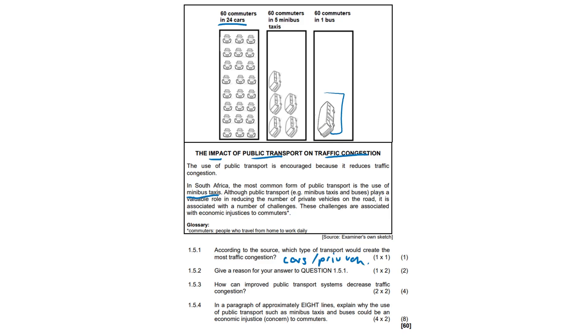1.5.3 How can improved public transport systems decrease traffic congestion? There's quite a few answers we can list here, but simply, there are fewer cars on the road. There's greater availability of public transport. There's more efficient public transport. There's a greater increase in accessibility. There's dedicated public transport. Anything along those lines would have scored you the mark.